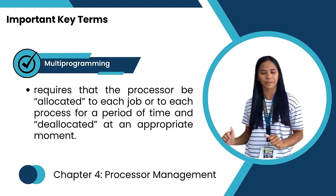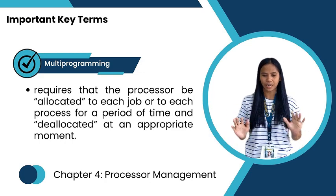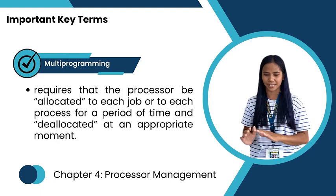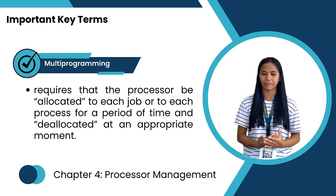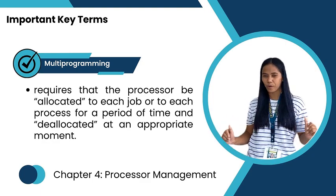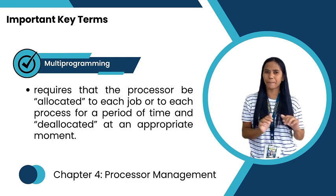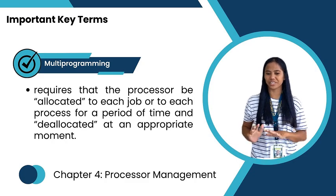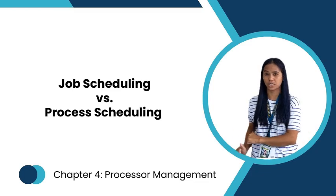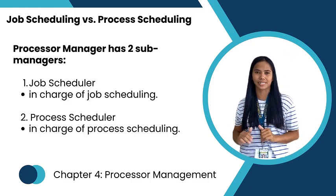Modern programming requires that processors be allocated to each job or process for a period of time at the appropriate level. The processor manager has two sub-managers: the job scheduler and the process scheduler.